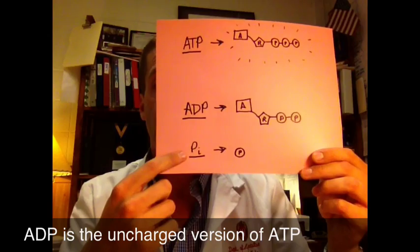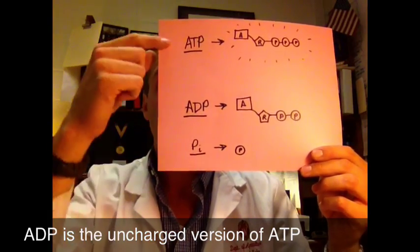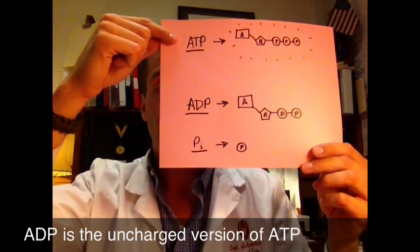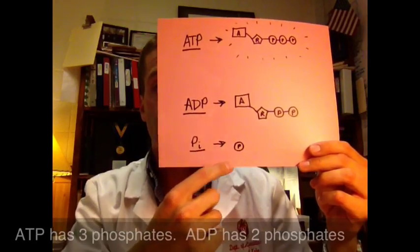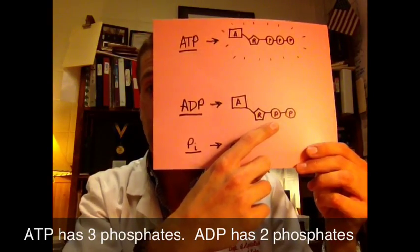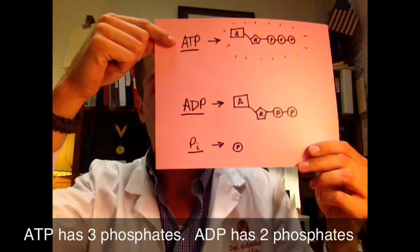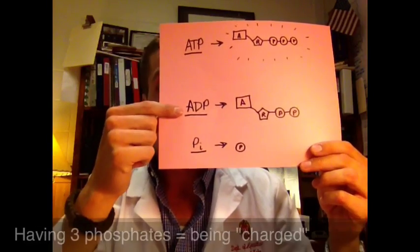When we add a phosphate to ADP, we get ATP, a triple phosphate. When we add one phosphate to a molecule with two phosphates, we get ATP. This has energy. This does not.